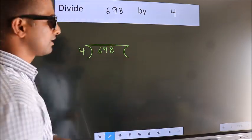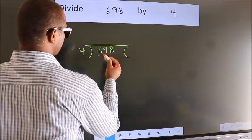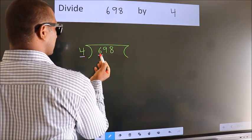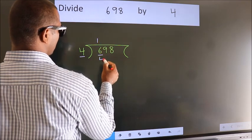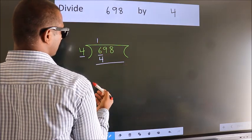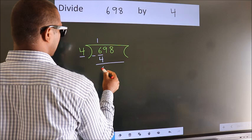Next. Here we have 6, here 4. A number close to 6 in the 4 table is 4 ones, which is 4. Now, we should subtract. We get 2.